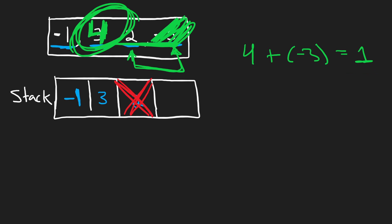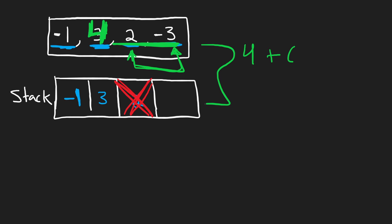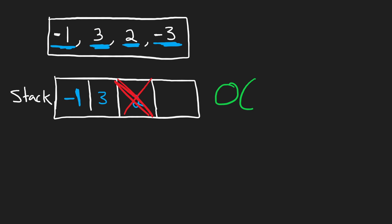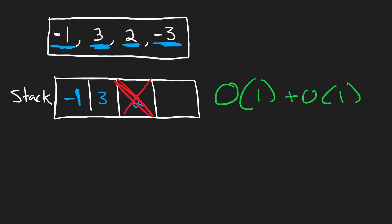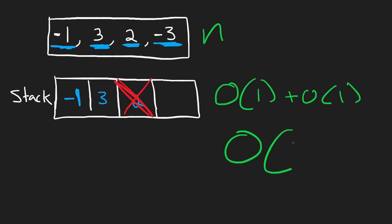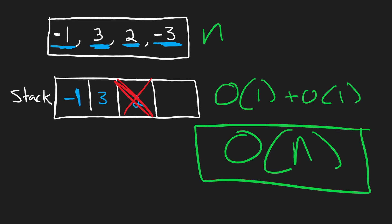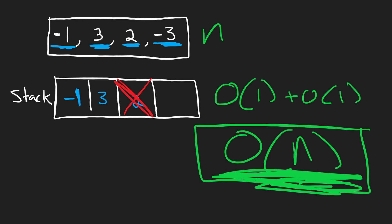The code is actually pretty simple once you understand how to use this stack. Since we're only adding an element and removing it from the stack once — O(1) plus O(1) — and we're doing that for every single element in the input array of size N, the overall time complexity is O(N), and the memory complexity is the exact same.